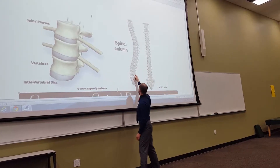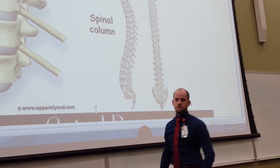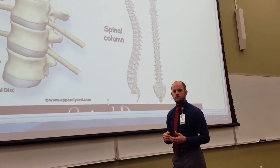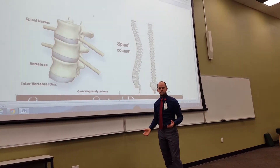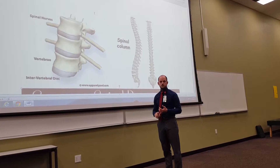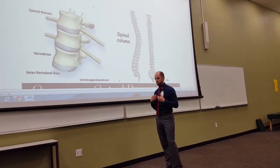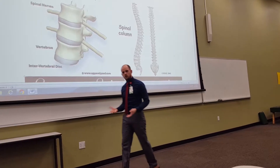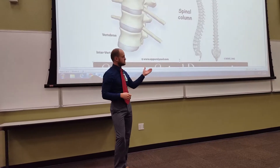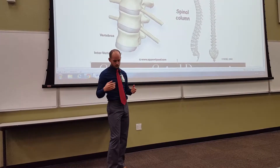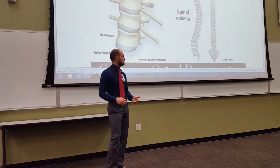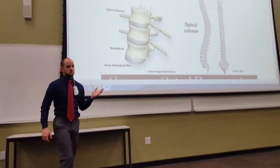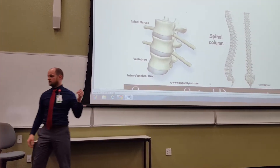Your brain sends information down through your spinal cord and out through these nerves right here that you can see at all these little holes in between the different bones in your spine. The information being sent from there controls every function in your body — from your lungs helping you breathe, your heart beating and moving blood throughout your body, the muscles it takes to walk and talk. It also sends information back from the environment around you, like the ground you're walking on or the pain you're currently feeling in your low back.